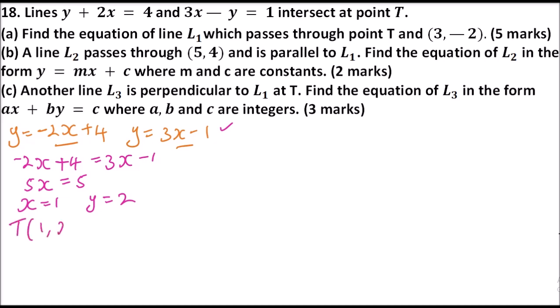Now that we have T as (1, 2), we can answer the question. To find the equation of L1 which passes through T and the point (3, -2), we first find the gradient. The gradient equals the change in y over change in x.